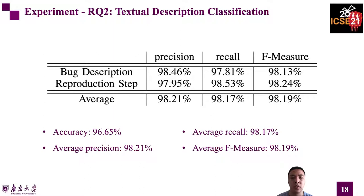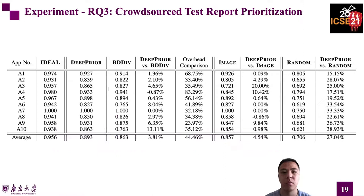More specifically, the average precision of the two types of textual description reaches 98.21%, the average recall reaches 98.17%, and the average F-measure reaches 98.19%. The third research question, utilizing APFD value, compares the prioritization effectiveness of DeepPrior with baselines. The first baseline is BDDiv, the state-of-the-art approach for crowdsourced test report prioritization. DeepPrior outperforms BDDiv with only half of the overhead. Compared with the image-only approach, which uses only the image analysis part of DeepPrior, DeepPrior also outperforms. The results show that DeepPrior's capability of prioritizing crowdsourced test reports is excellent and it outperforms the state-of-the-art approach.